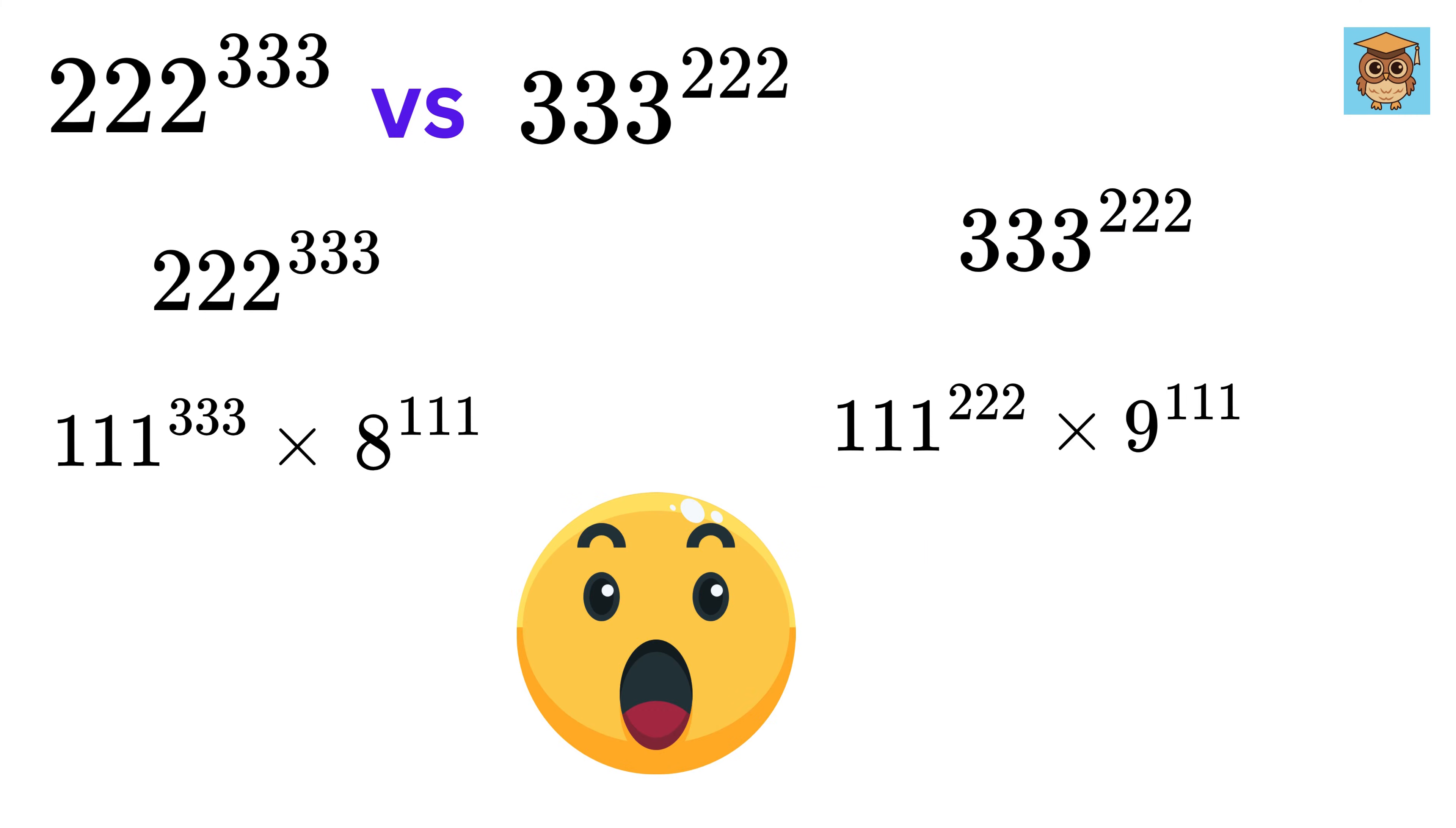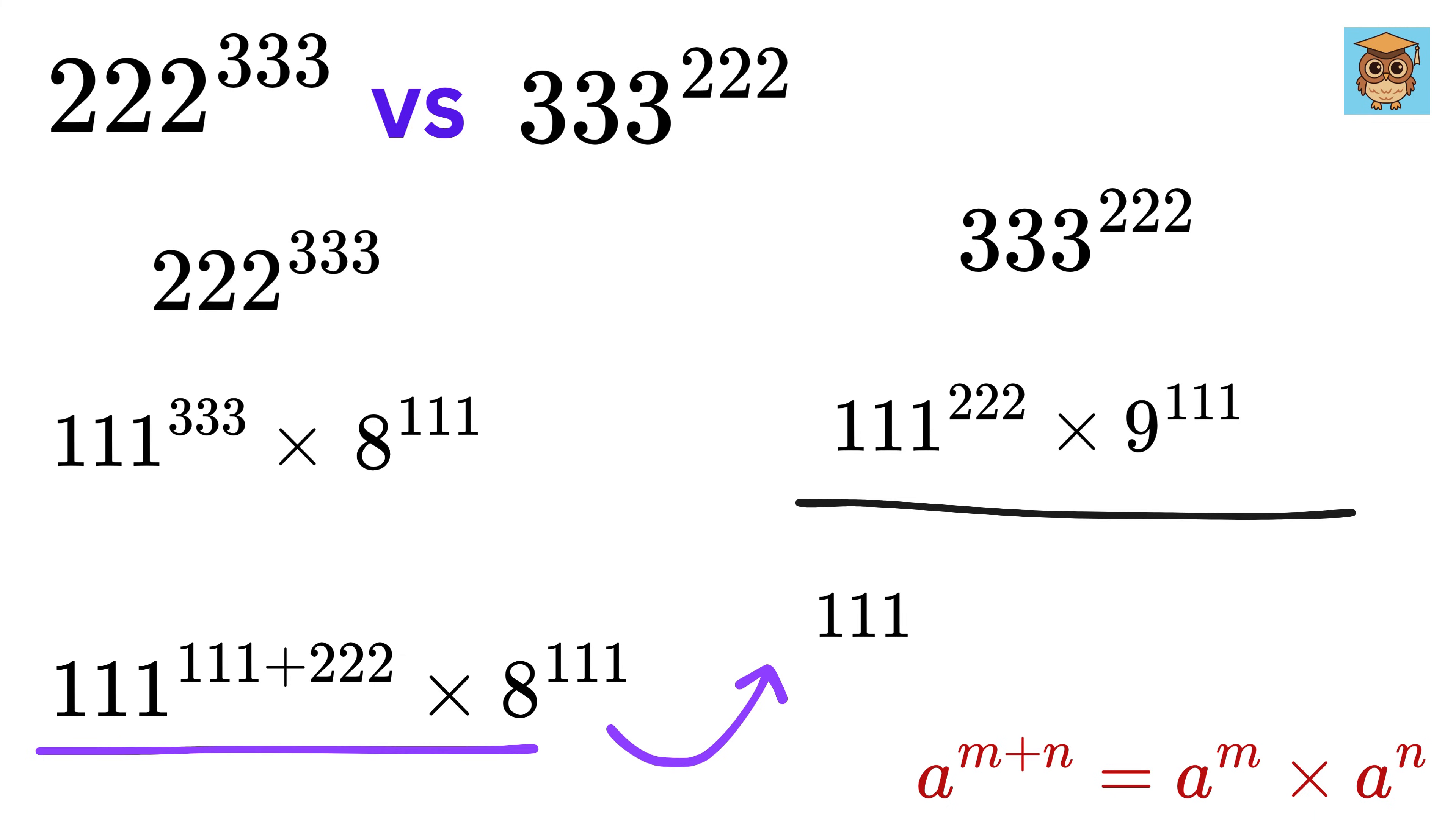This is getting interesting, isn't it? Now write this 111 raised to 333 as 111 raised to 111 plus 222. Now use this power rule to get this as 111 raised to 111 times 111 raised to 222.